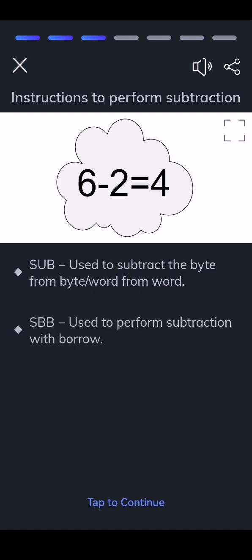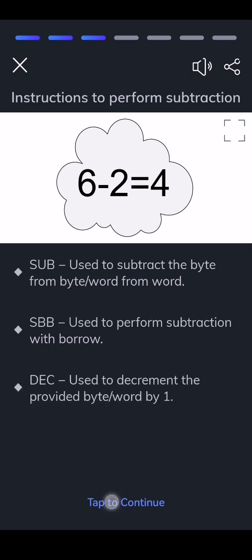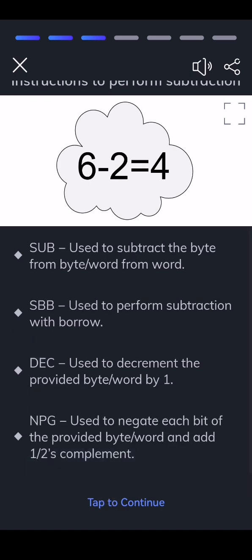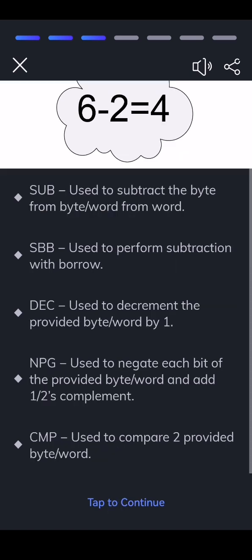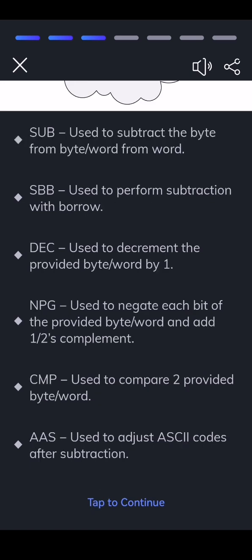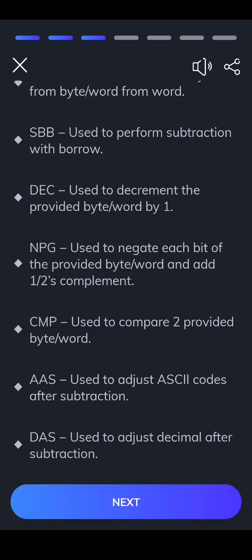SUB — used to subtract the byte from byte or word from word. SBB — used to perform subtraction with borrow. DEC — used to decrement the provided byte or word by one. NEG — used to negate each bit of the provided byte or word and add two's complement. CMP — used to compare two provided bytes or words. AAS — used to adjust ASCII codes after subtraction. DAS — used to adjust decimal after subtraction.